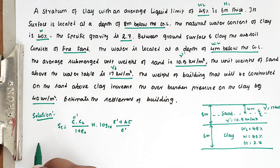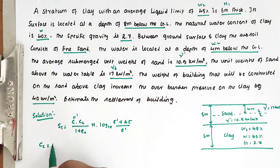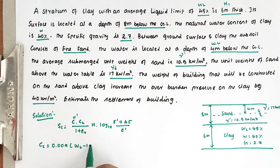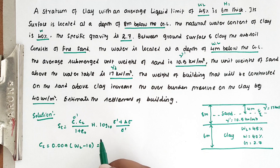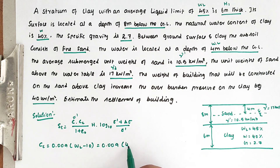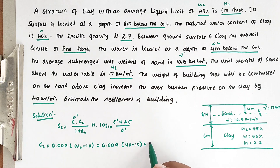Now we can take CC. The formula is CC = 0.009 × (WL − 10). Substituting WL as 45 percentage: 0.009 × (45 − 10). Solving this, we get the value of 0.315.